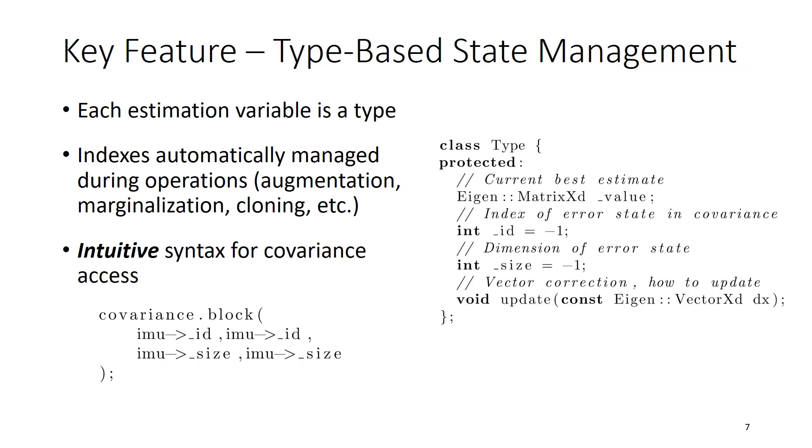One of the key features to our system is type-based state management. Each estimation variable that we're trying to estimate is a type. The index into the location of the covariance is automatically managed during covariance reordering operations, such as augmentation, marginalization, and cloning. What this index or ID management does is it allows for intuitive syntax into the covariance.